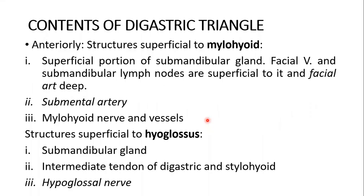The contents of the digastric or submandibular triangle: it contains the superficial portion of the submandibular gland. The facial vein and submandibular lymph nodes are superficial to it, and the facial artery is deep to it. Also present are the submental artery, the mylohyoid nerve and vessels. Structures superficial to the hyoglossus include the submandibular gland, the intermediate tendon of the digastric, stylohyoid, and the hypoglossal nerve.